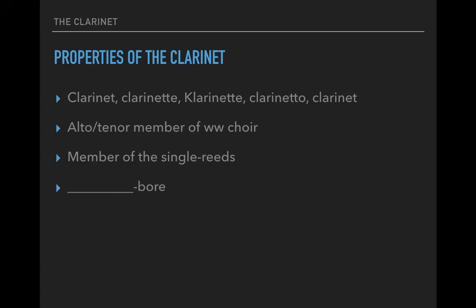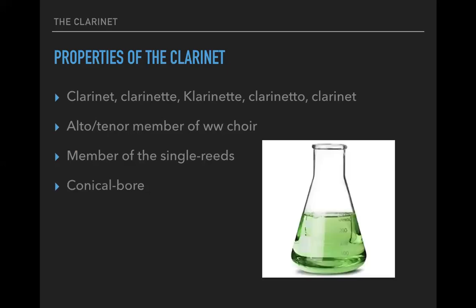As we've seen so far, the flute was cylindrical — the same diameter from top to bottom — versus the oboe, which we saw was conical. So what would you say is the clarinet? Well, conical as well — you can picture that flare at the bell, which contributes to the sound. It's not the only thing that contributes to the resulting sound, but it is conical.